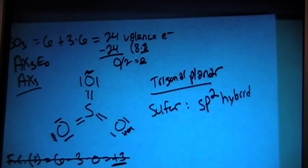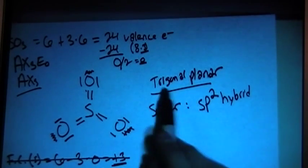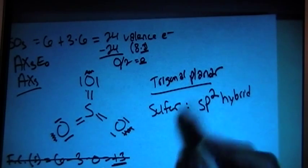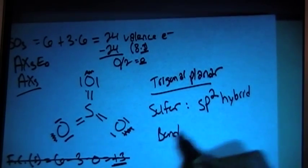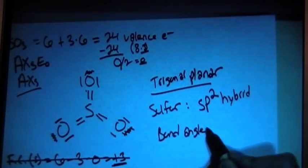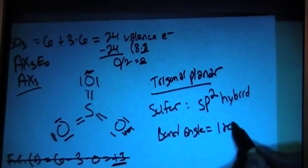SP2 hybrid orbitals. And due to the fact that it's a trigonal planar, the bond angle should be equal to 120 degrees.